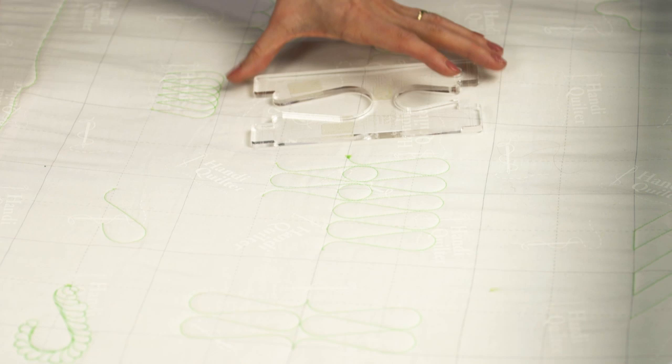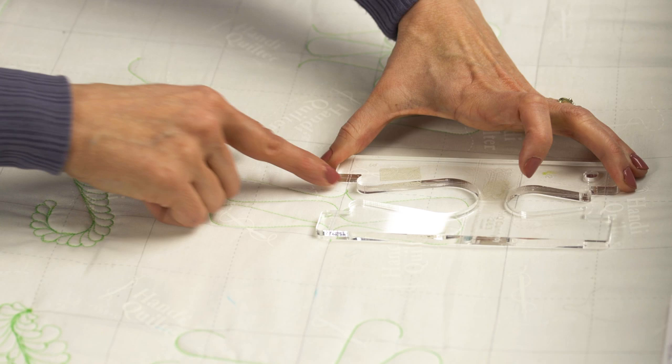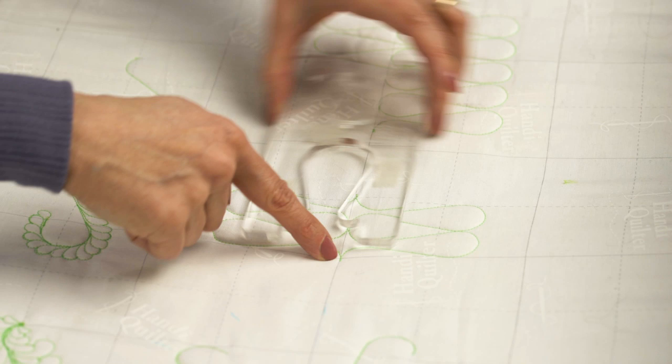Let's move on to this motif. It's a similar one where we're going to stitch just two and then I'm going to rotate the ruler upside down and stitch back the other direction.